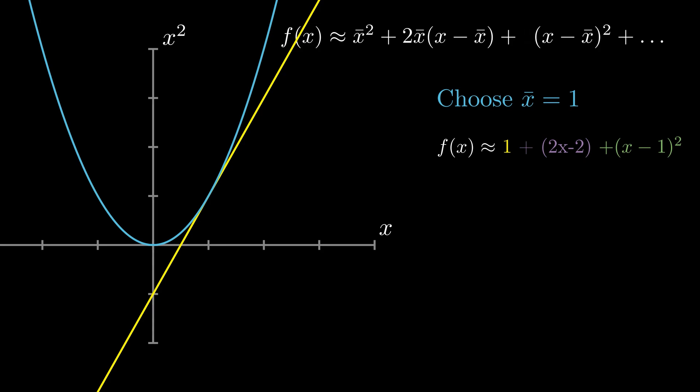And what you'll notice, having both of these graphs on the screen at the same time, is that actually around x equals 1, that line is pretty close to the curve. So the straight line isn't an exact model for the nonlinear system, however around x equals 1 it's pretty close.